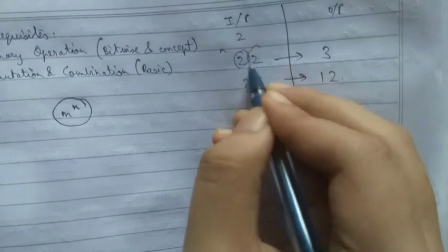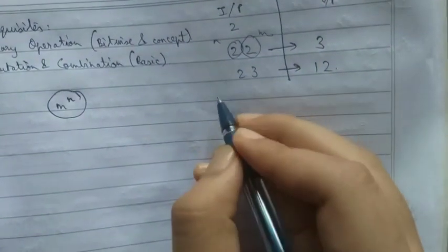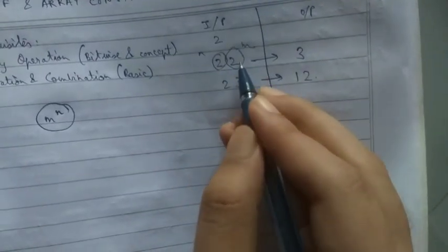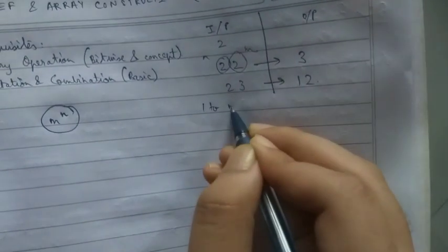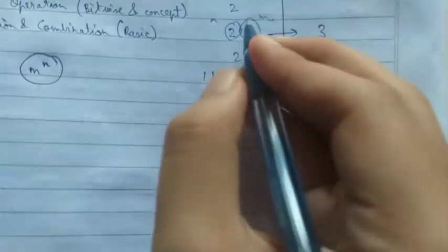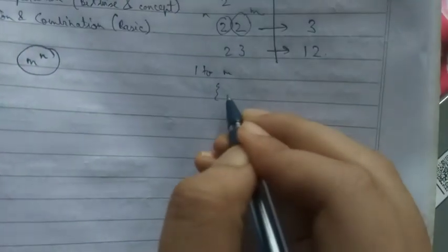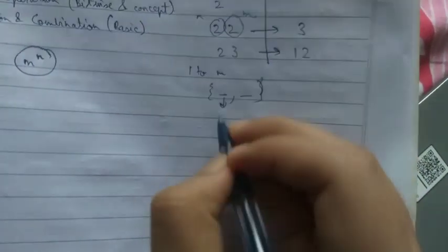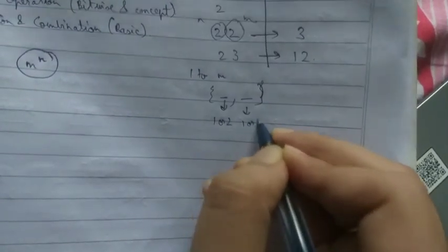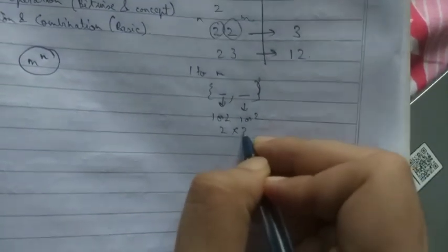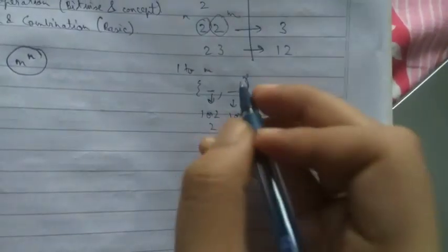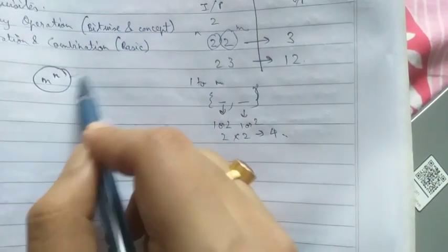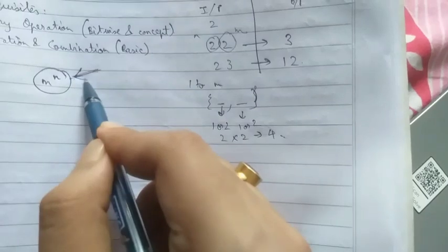This is n and this is m. The question states that you have to make arrays of size n and the numbers in it would be from 1 to m. So the size of the array would be 2, that is n, and each element can be either 1 or 2, giving 4 possibilities — that is m to the power n. The number of possible arrays would be m to the power n.